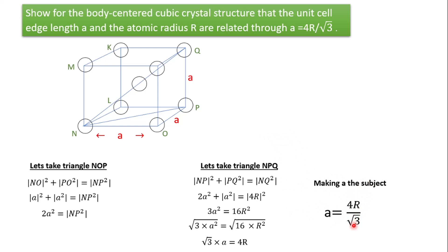To summarize: first label your lattice parameter and find NP² using the face diagonal. Then draw a line that passes through the most atoms — the body diagonal is r + r + r + r = 4r. Note that the corner atom outside the unit cell is not counted, as we are only considering atoms inside the unit cell.